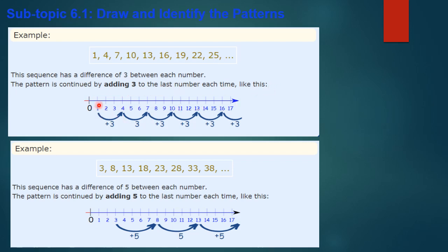On the number line: 1 goes to 4, 4 to 7, 7 to 10, 10 to 13, 13 to 16, 16 to 19, 19 to 22, and 22 to 25. So if we want to find the next number after 25, we add three to 25, giving us 28. To find the next number in a sequence, first find the difference between two consecutive numbers, then apply that difference.